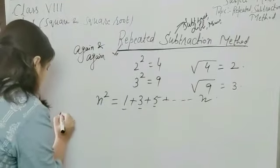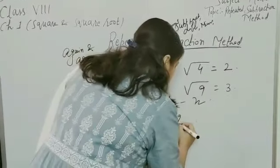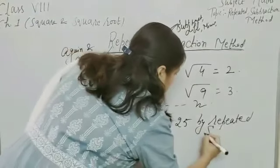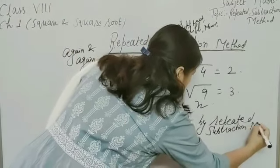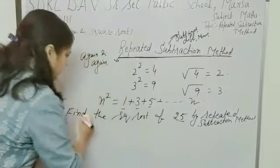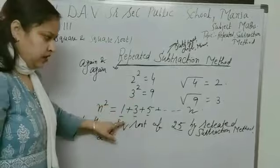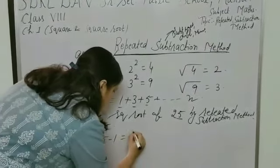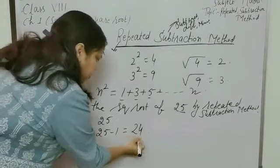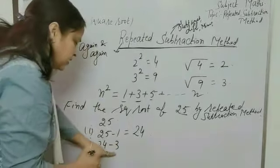For example, find the square root of 25 by repeated subtraction method. First of all, we will write the given number, which is 25. Now, from this 25, we will subtract the first odd natural number. Means, 25 minus 1, which is equal to 24. This is our first step. Now, second step is, from this 24, we will subtract the next odd natural number, which is 3. Means, 24 minus 3 is equal to 21.